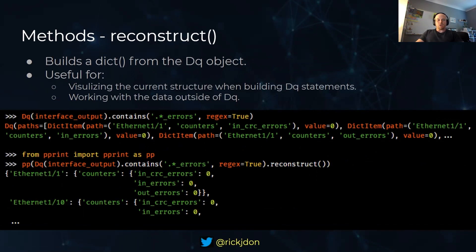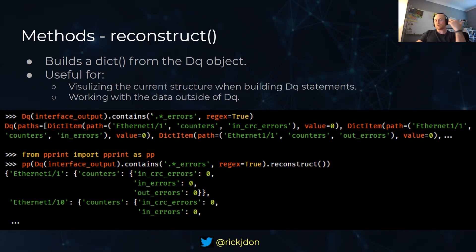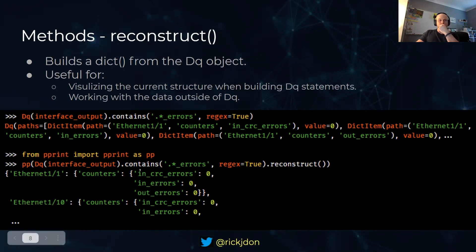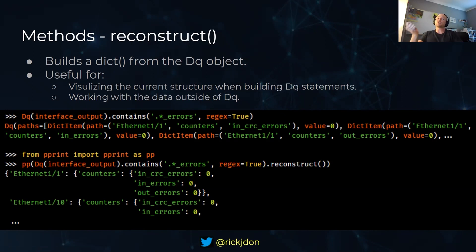With the contains object, by default if you don't pass anything else after contains, you will get back a DQ object. So we do some filtering on our interface output using regex - looking for any key that ends with 'errors' - and we get back the actual DQ object of the path it's found. What we can then do is reconstruct that back into a dictionary using the reconstruct method. So that previously huge interface output is now filtered down just to those values we filtered using contains.